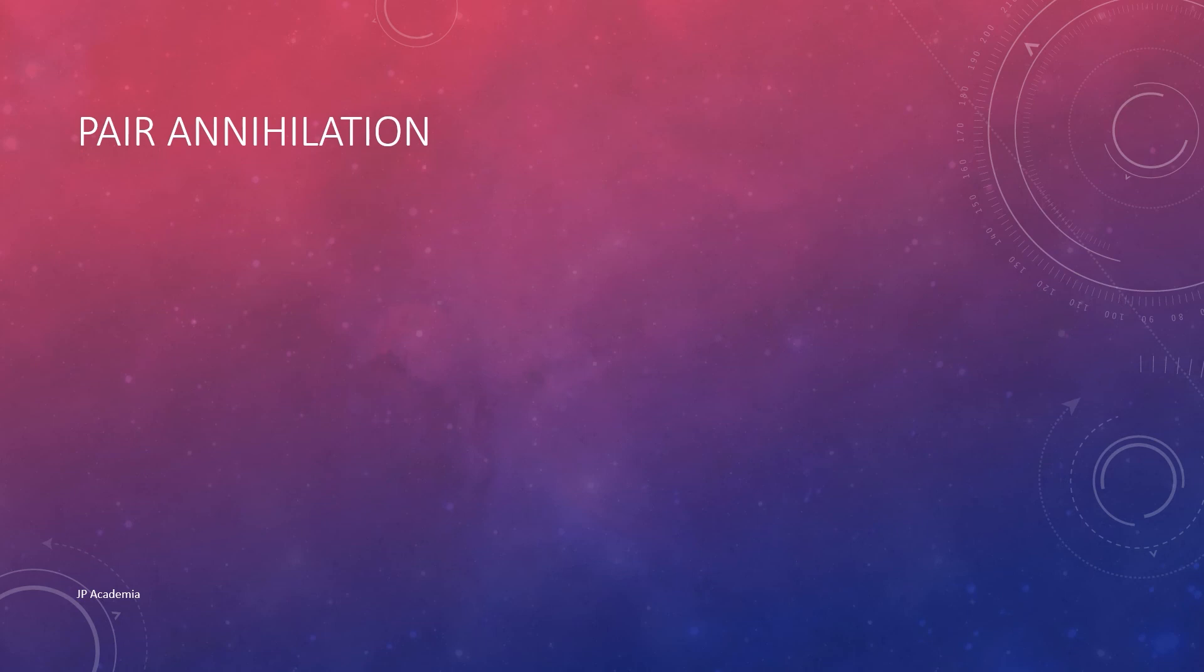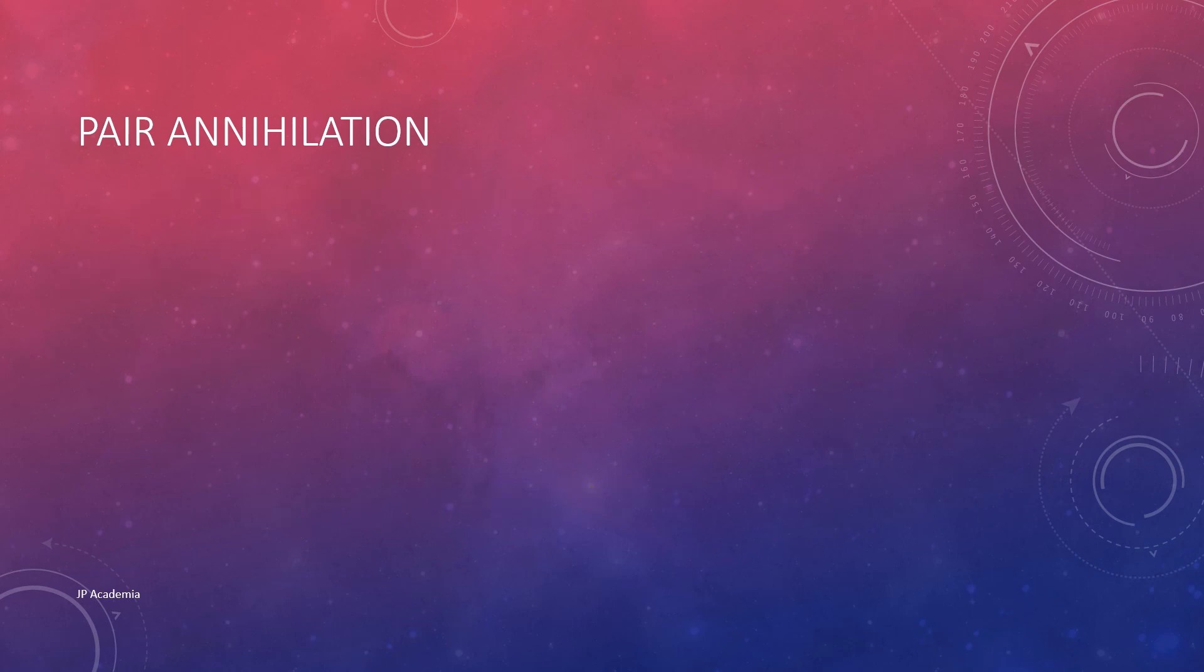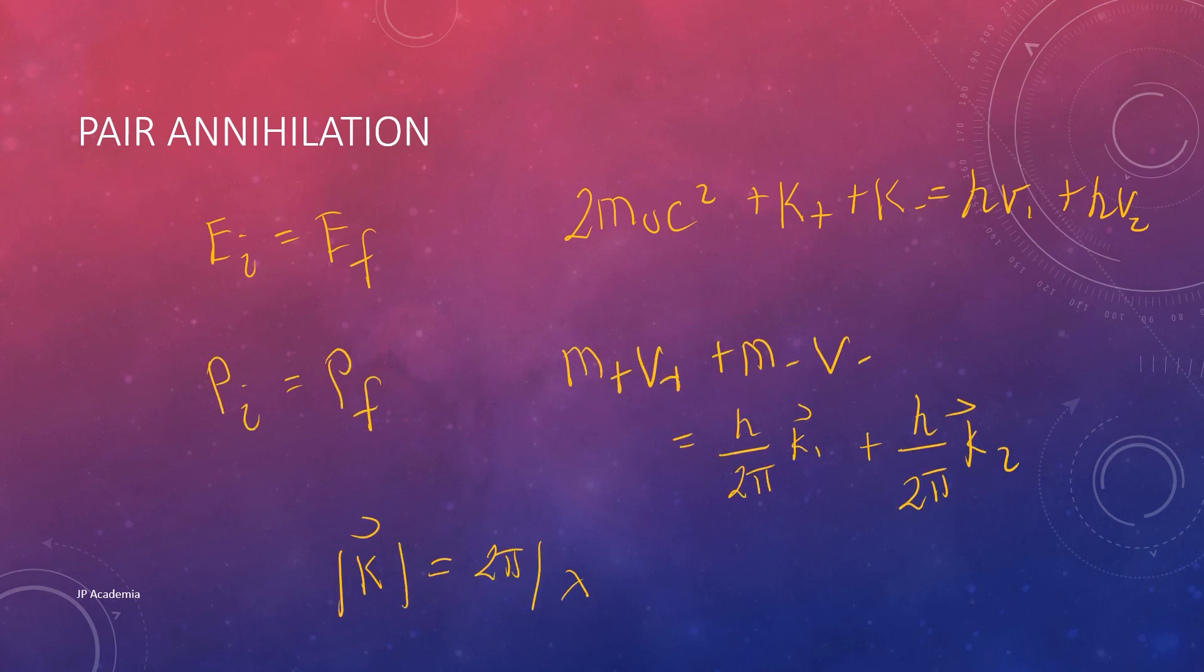On the other hand, we have pair annihilation. Positron-electron pair results in creating two or more photons. To conserve both the energy and momentum, we need at least two photons. This can take place in empty space. For pair annihilation, by the conservation of energy and momentum, we have these two expressions. The k-vector for the momentum here refers to the photon's propagation vector as defined below.